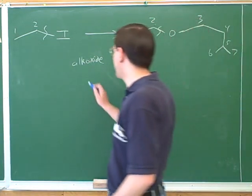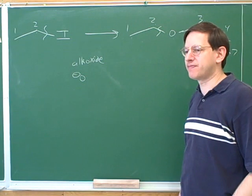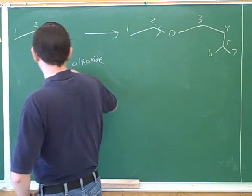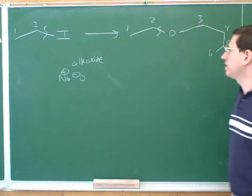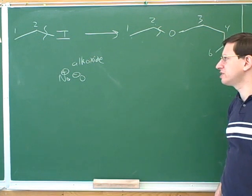Well, one thing we know the alkoxide has is a negative oxygen. That's the definition of an alkoxide. If you want to, you can show the spectator cation as well. That's the technicality. Now, in order to get this product, who would it be helpful for this negative oxygen to be connected to?